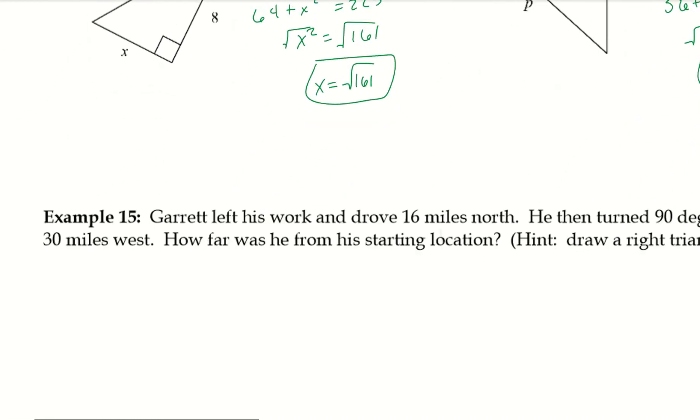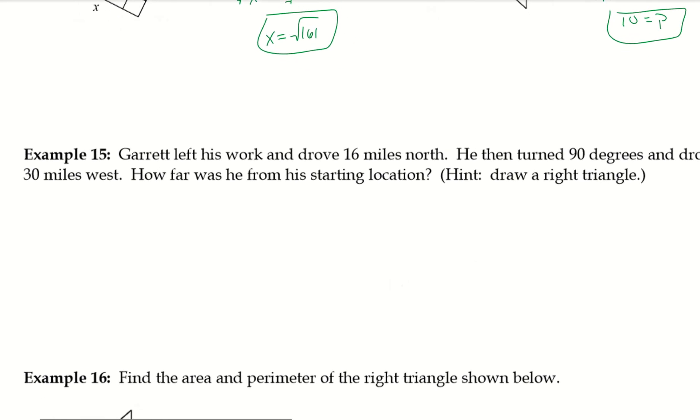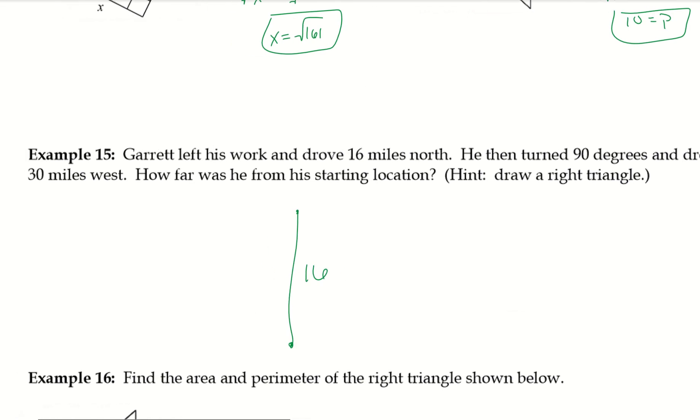Alright. Example 15. Garrett left his work and drove 16 miles north. So, he's out work here. He drove 16 miles north. Then, he turned 90 degrees and drove 30 miles west. How far was his starting location? Draw a right triangle. So, we want to know how far he was away if he took that straight path there. So, I'm going to first, especially since we're working with these Pythagorean triples, I'm going to check to see if I have any. So, 30 and 16. Let's see, I could divide by 2. And that would give me 15 and 8. And I definitely have a Pythagorean triple that is 8, 15, 17. So, my hypotenuse is 17. Now, I have to just really pay attention to that scale factor. 15 to 30, I multiply by 2. So, 17 to my missing side out here, I also need to be multiplied by 2. That would be 34. So, therefore, he was 34 miles away.